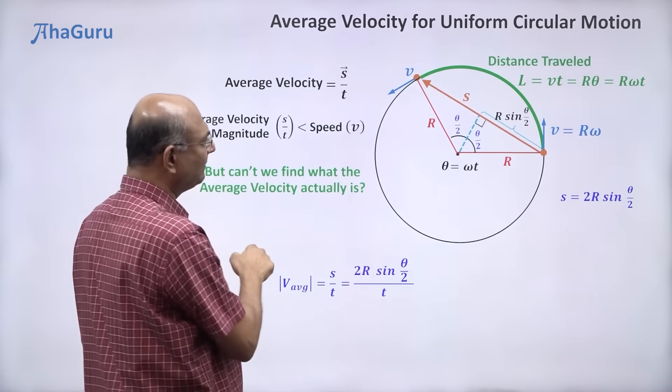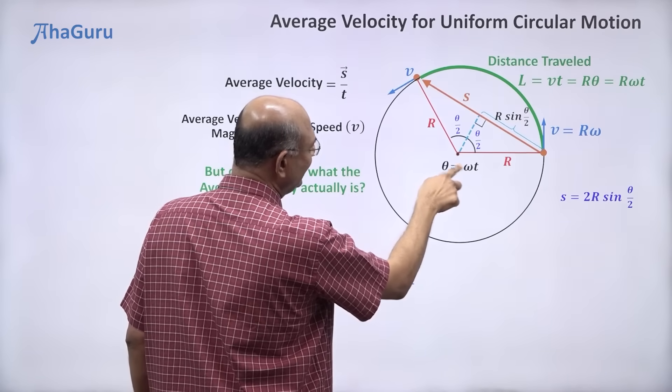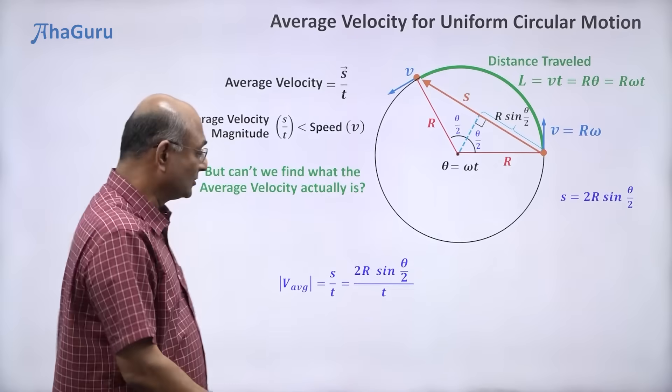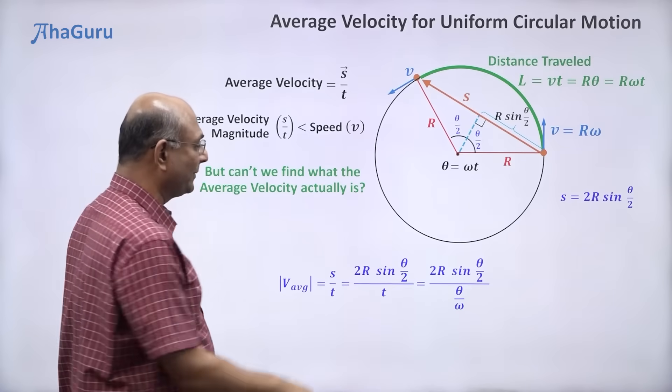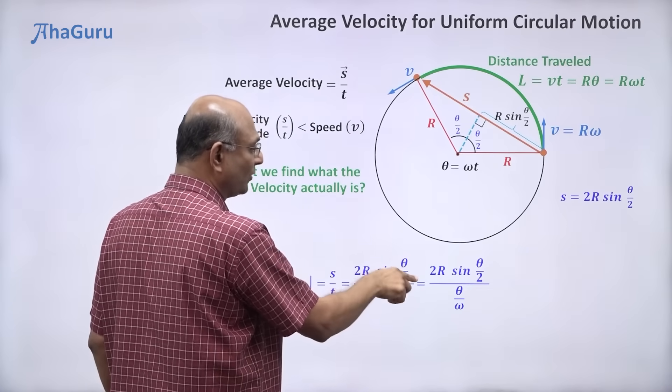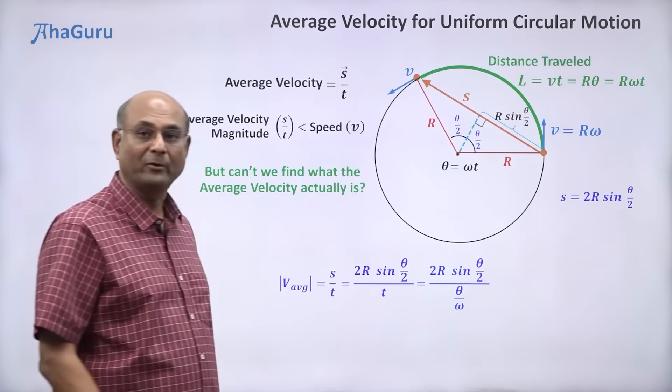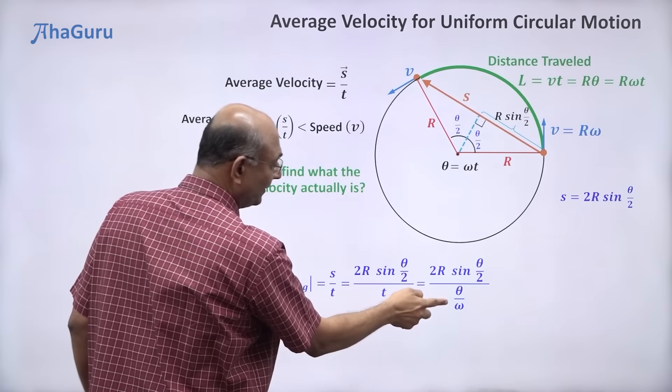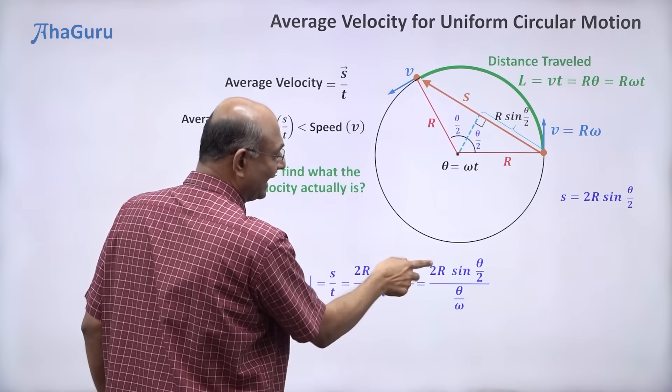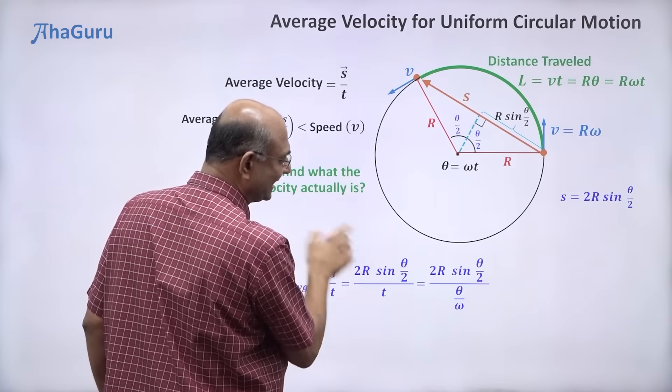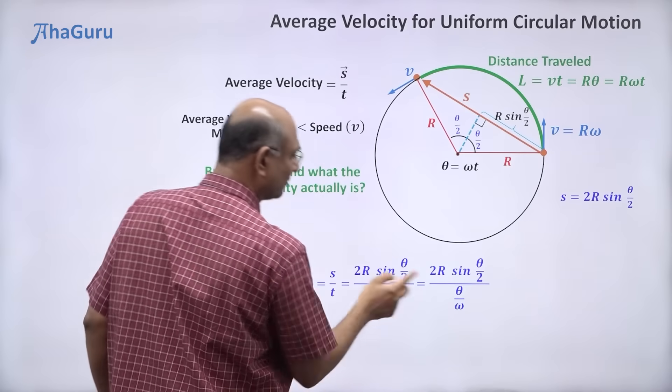I can stop here. But I can also look at this and say t is theta by omega. So if I substitute for t theta by omega, I can rewrite this as 2r sin theta by 2 by theta by omega. Now this omega goes up. It will become r omega. Instead of leaving it there, I will bring the 2 down.